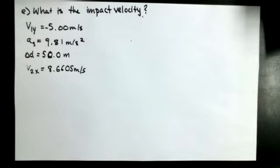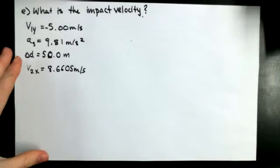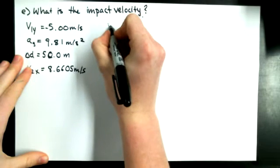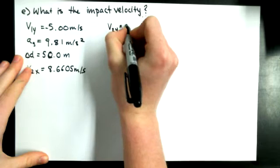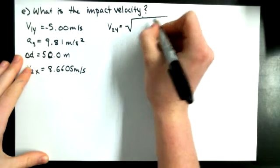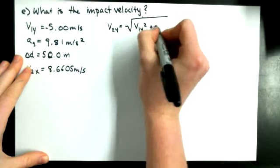So the first thing we want to do is find V2Y, so for that we're going to use the equation V2Y equals the square root of V1Y squared plus 2A delta D.